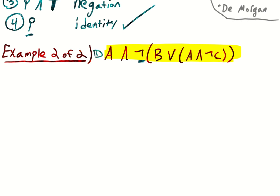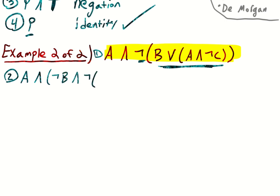So this is line one. For line two, we can apply De Morgan here to get: a and (not b and not (a and not c)), by De Morgan.